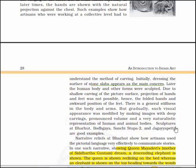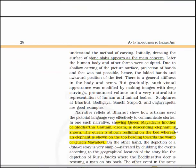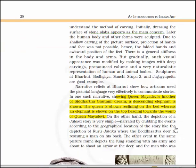That's why the folded hands and awkward position of the feet show a general stiffness in the body and arm. But gradually such visual appearance was modified by making images with deep carvings, pronounced volumes and very naturalistic representations of human and animal bodies. Sculptures at Bharud, Bodhgaya, Sanchi Stupa 2 and Jagayapeta are good examples.